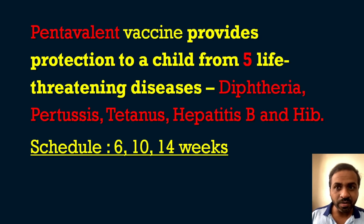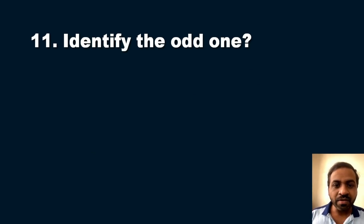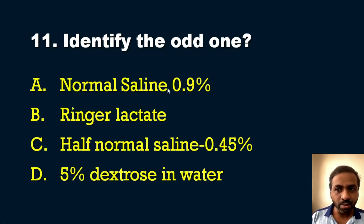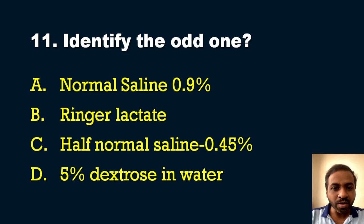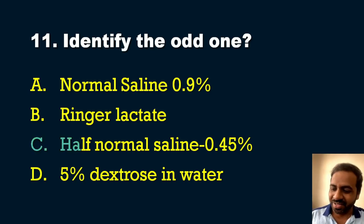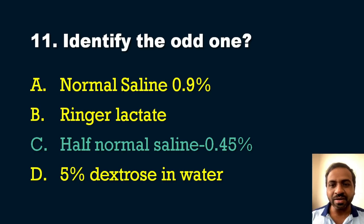The eleventh question is a tricky application-level question — identify the odd one. Options: A) Normal saline (0.9%), B) Ringer's lactate, C) Half normal saline (0.45%), D) 5% dextrose in water. The answer is option C — half normal saline (0.45%). All other options are isotonic solutions, but half normal saline is a hypotonic solution, making it the odd one out.